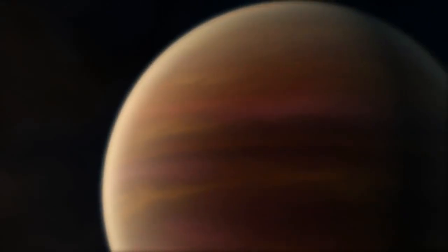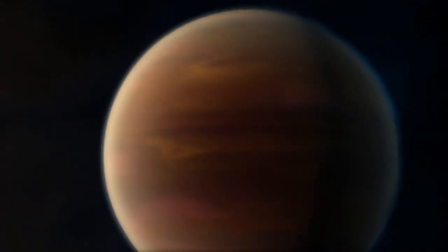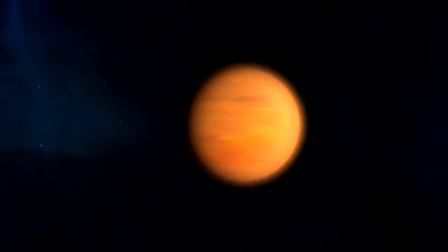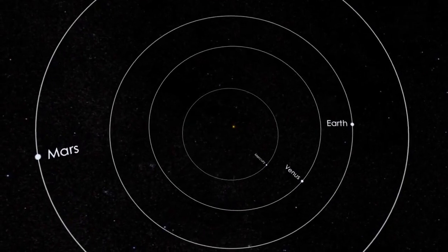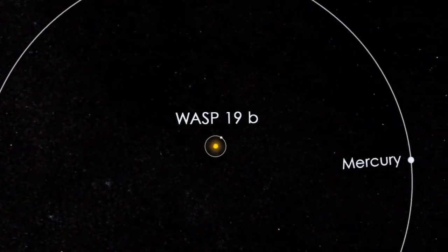Recent studies suggest that exoplanets and their atmospheres come in a wide variety. At one extreme are hot Jupiters like WASP-19b, a boiling gas giant that orbits its star far closer than Mercury orbits our sun.